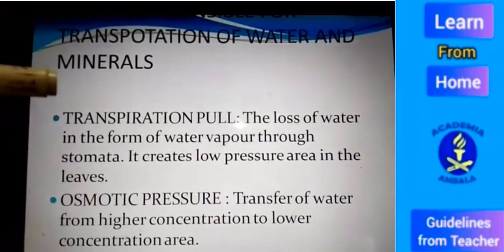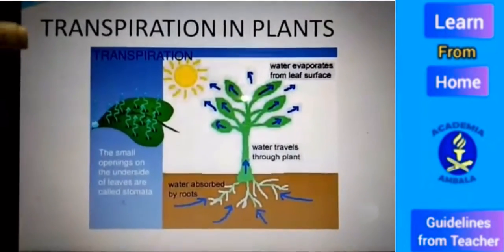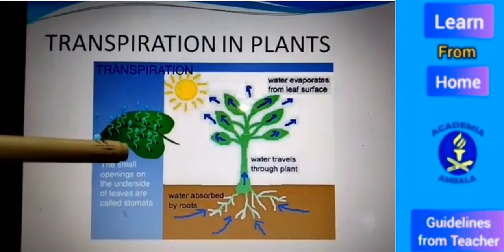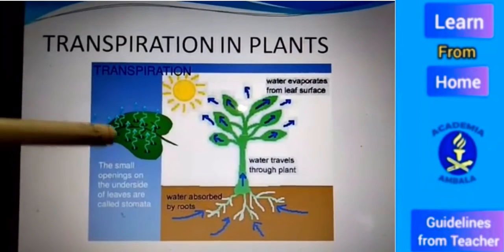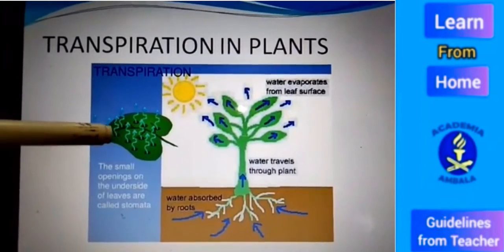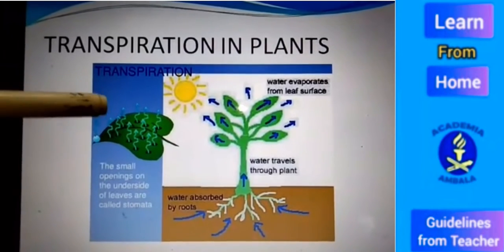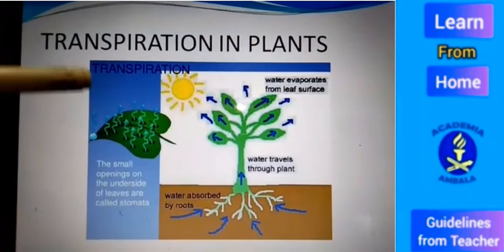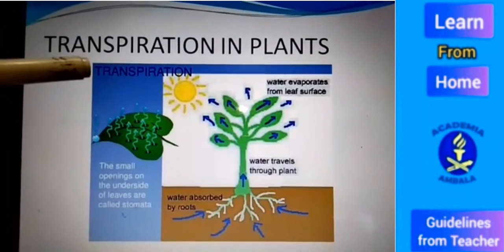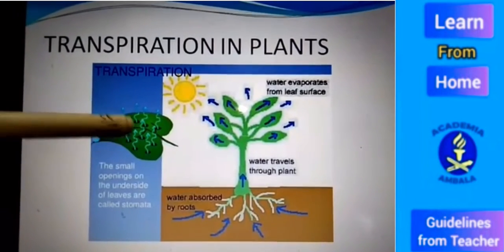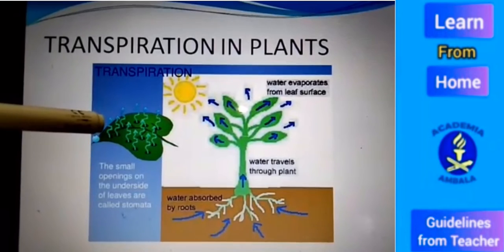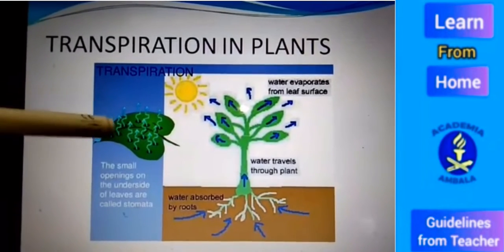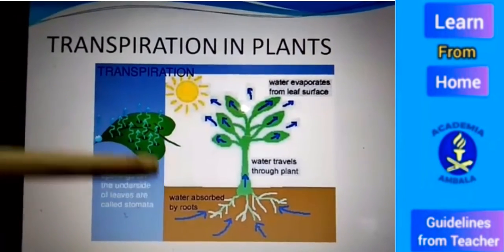Now you can see diagrammatically how transpiration works in plants. Leaves have stomata, and through stomata, water in the form of water vapour escapes out — that process is known as transpiration. Due to transpiration, leaves maintain a low pressure area, and by a sucking action, water is taken toward the leaf.